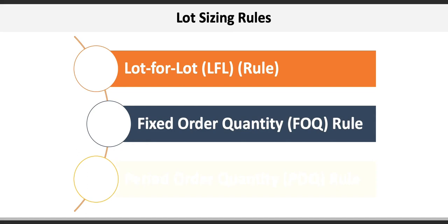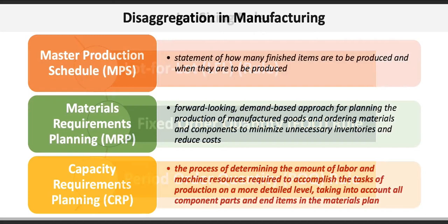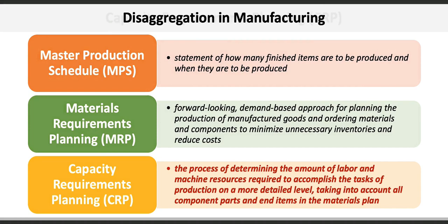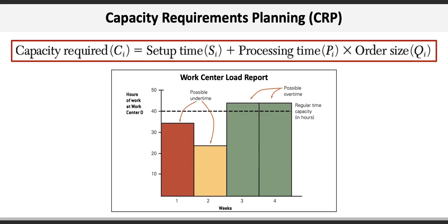The last technique used in disaggregation and manufacturing is capacity requirements planning, which is the process of determining the amount of labour and machine resources required to accomplish the tasks of production on a more detailed level, taking into account all component parts and end items in the materials plan. This involves a relatively simple formula: capacity required C equals setup time S plus processing time P times order size Q. The total hours required is also known as the work centre load, which can be presented visually showing where we might experience possible under time and over time. Management can consider shifting production into underutilized periods to optimize resource use rather than go into overtime.